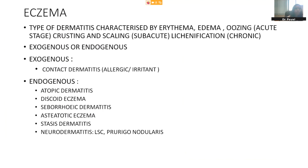Coming to the inflammatory diseases. Eczema is basically a dermatitis characterized by erythema, edema, and oozing in the acute stage; crusting and scaling in the subacute stage; and lichenification in the chronic stage. Lichenification is increased skin markings, increased hyperpigmentation and thickening. It can be exogenous (contact dermatitis from an external source — allergic or irritant) or endogenous. Endogenous eczemas include atopic dermatitis, discoid eczema, seborrheic dermatitis, pityriasis alba, asteatotic eczema, stasis dermatitis, and neurodermatitis — like lichen simplex chronicus and prurigo.